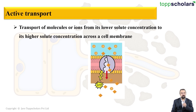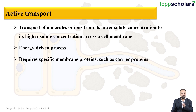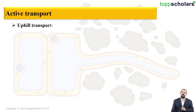Because energy is required, this is called an active process or active transport. It is an energy-driven process, meaning energy will be utilized. The transport also requires certain specific membrane proteins, also called carrier proteins, as they carry the particular substance, ion, or molecule from one place to another. These proteins are extremely specific for the molecules they transport.